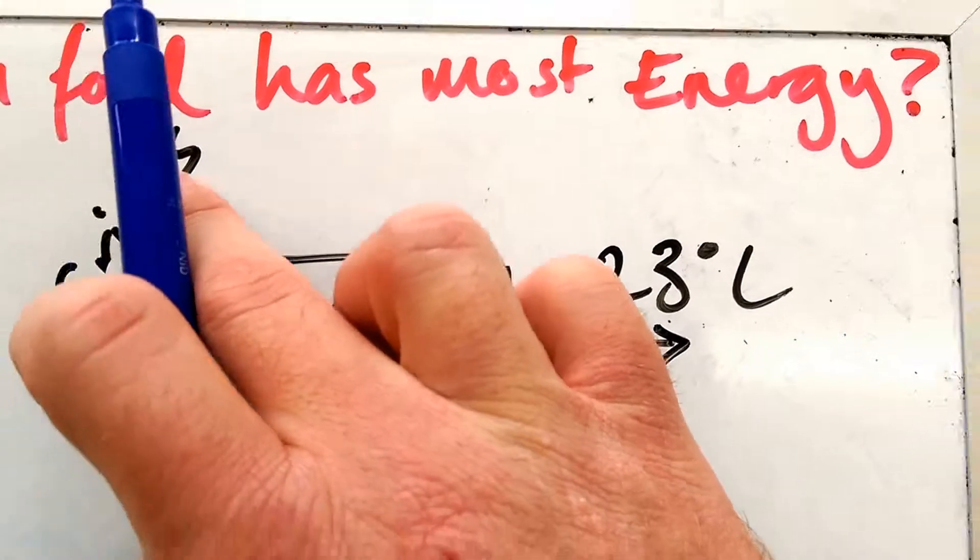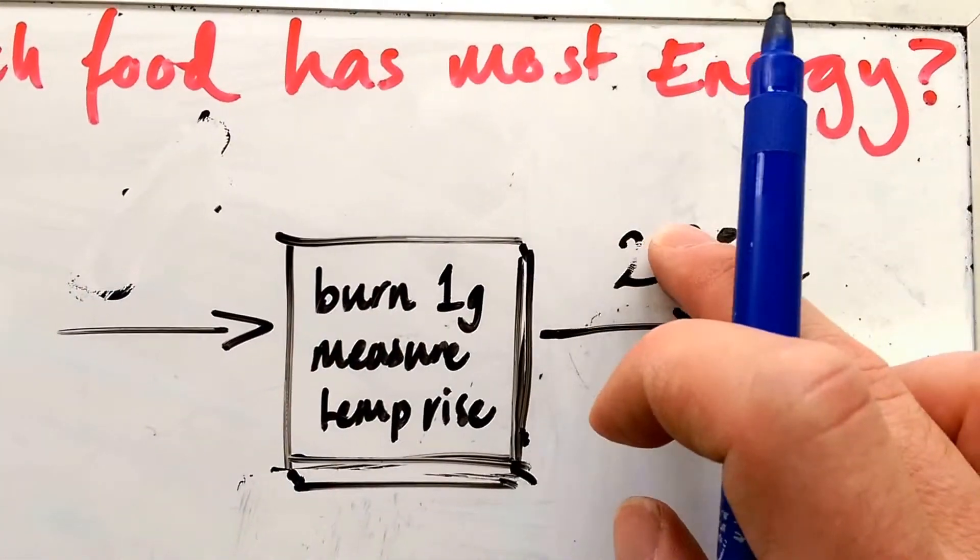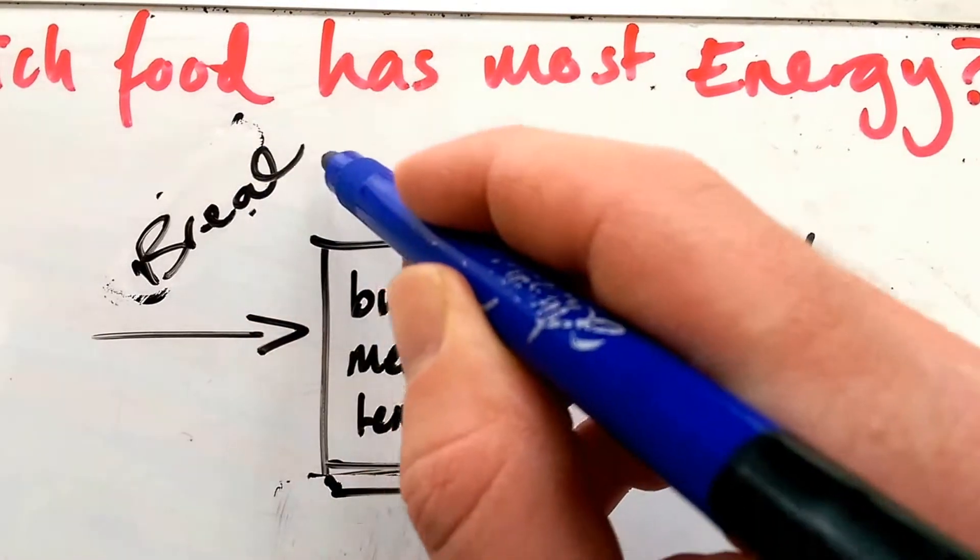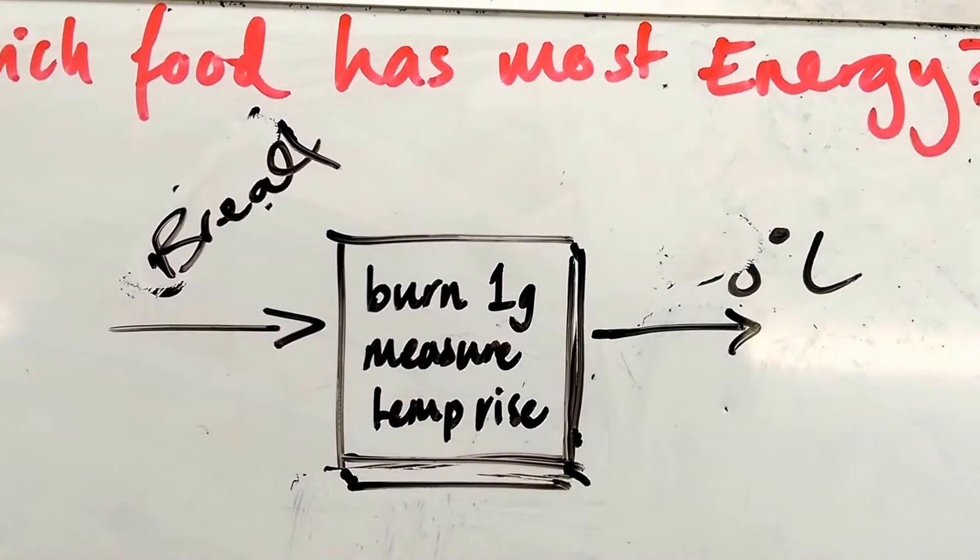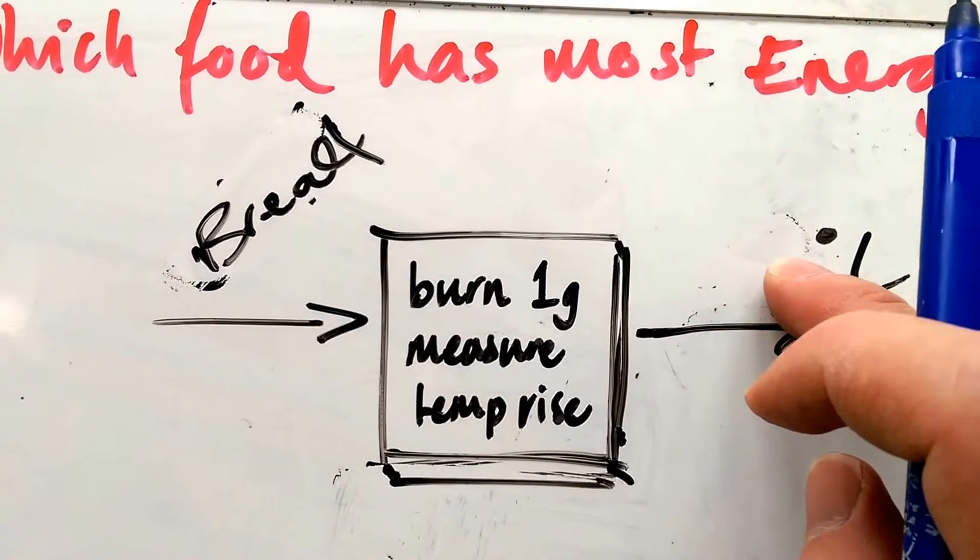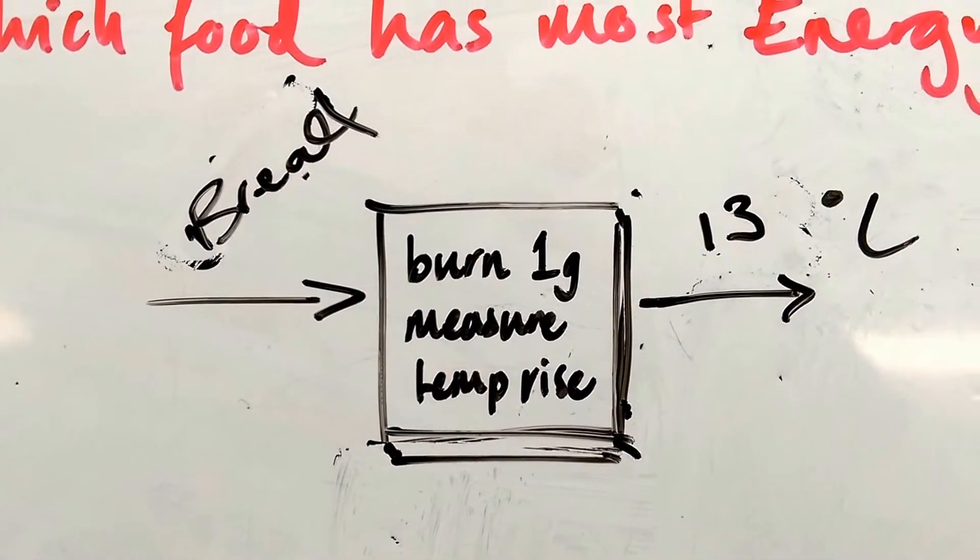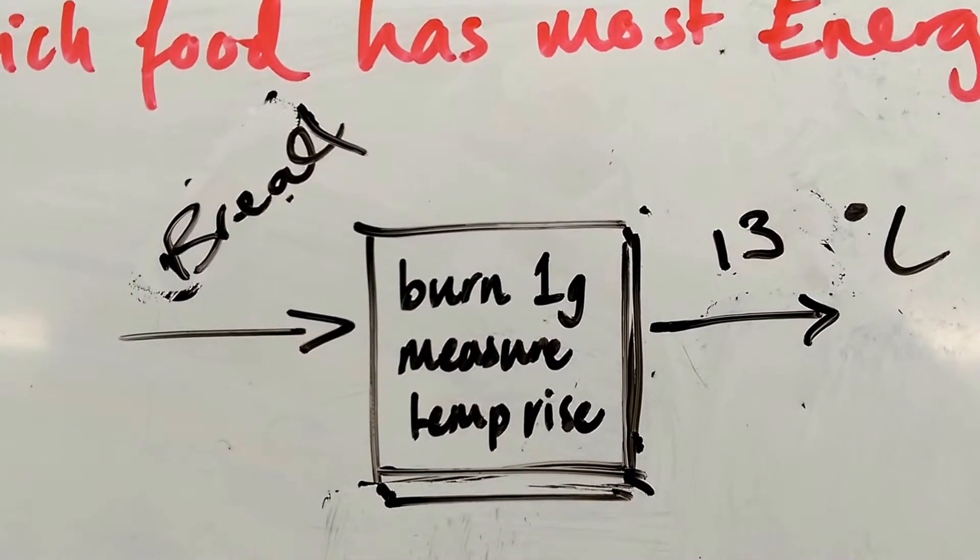Now I'll burn some bread. Put in some bread. The experiment is going to burn 1 gram of it and measure the temperature rise. The value I get out will be different, depending on what I put in.